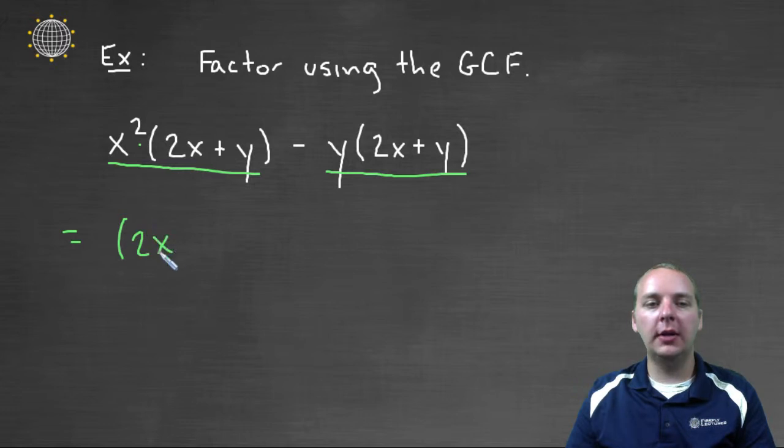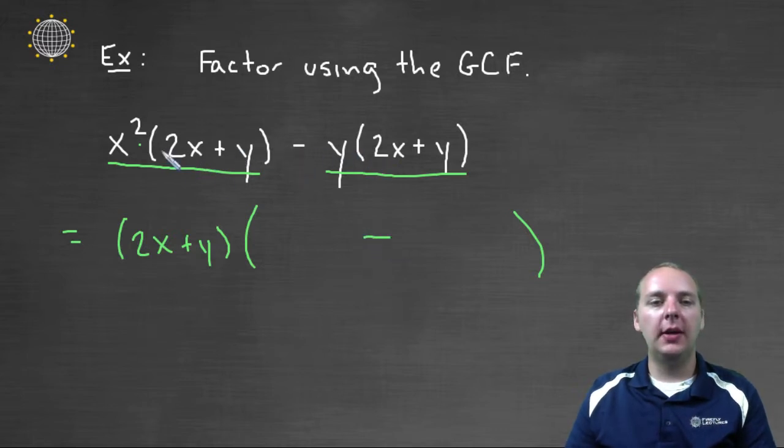And then as far as what's left over, we're going to have two terms left over, just like we had when we started. But we're going to have to ask ourselves, 2x plus y times what would give us x squared times 2x plus y? Well obviously that answer is 2x plus y times x squared.